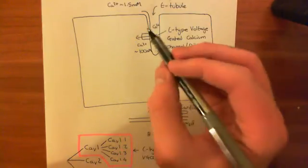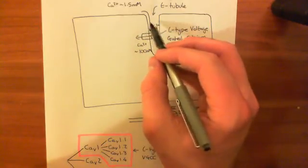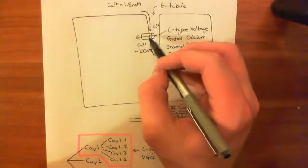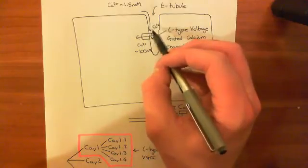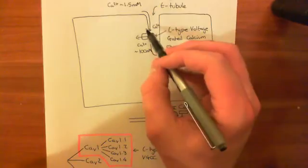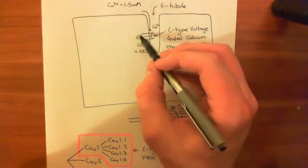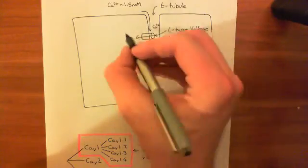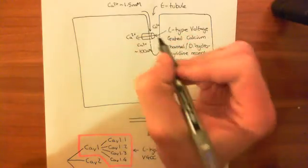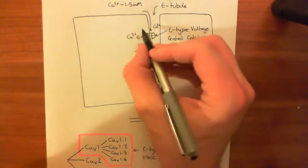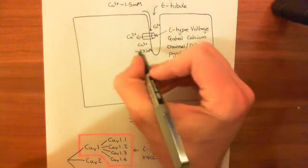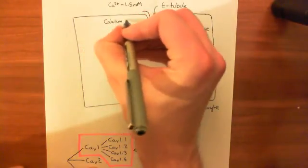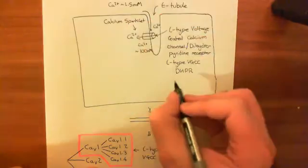There is a huge concentration gradient favoring calcium movement into the cell. In the upstroke of the action potential, voltage-gated calcium channels get activated. Although the action potential can reach up to around plus 20 millivolts, there may still be an electrical driving force driving calcium into the cell. You get a little movement of calcium from the extracellular compartment into the intracellular compartment through this L-type voltage-gated calcium channel. That rise in calcium around this L-type calcium channel is what is known as a calcium sparklet.